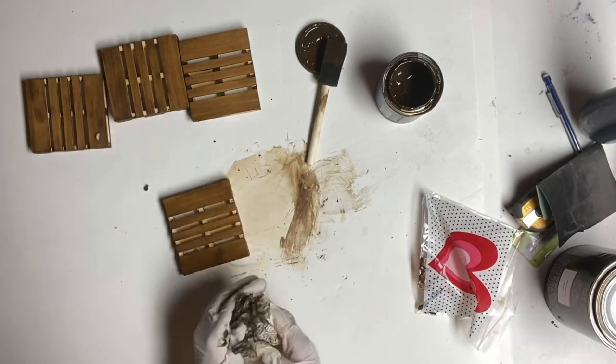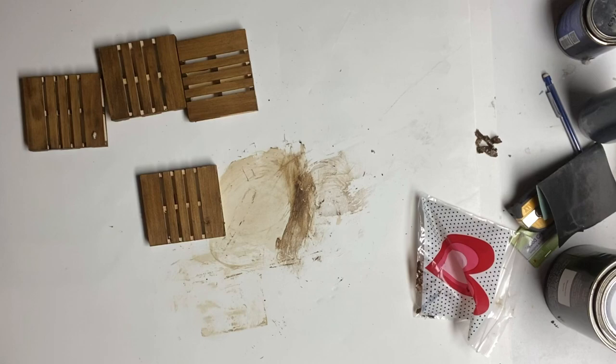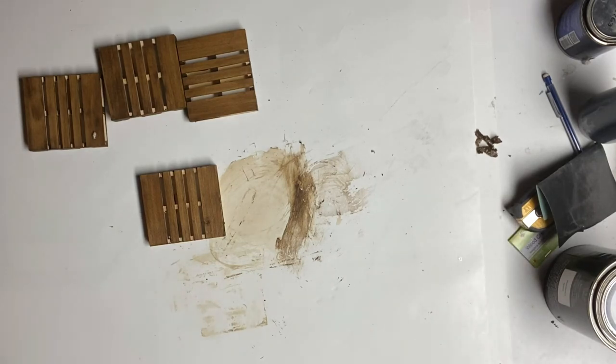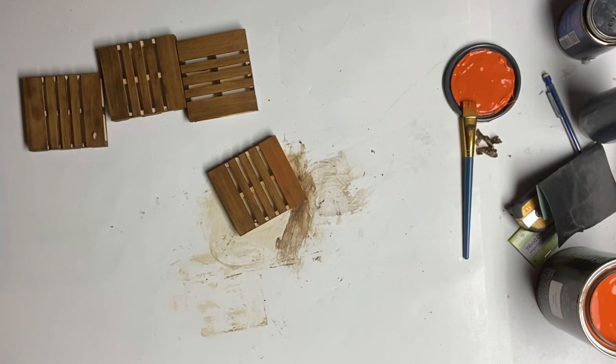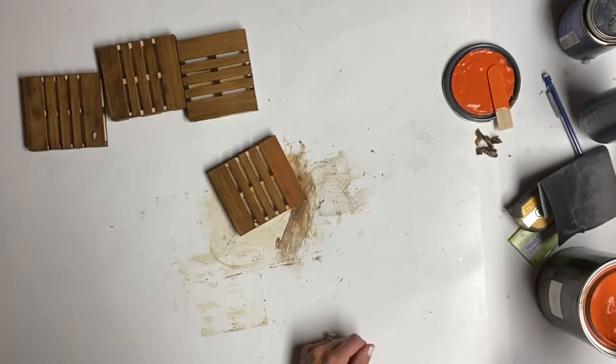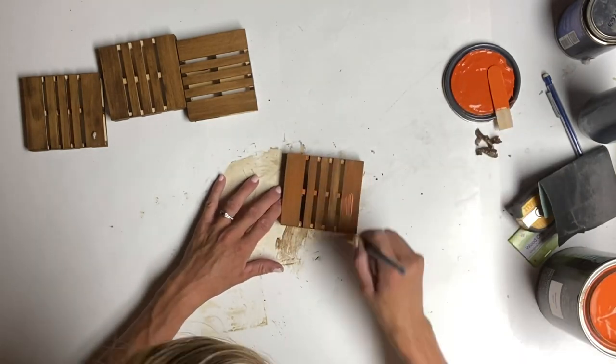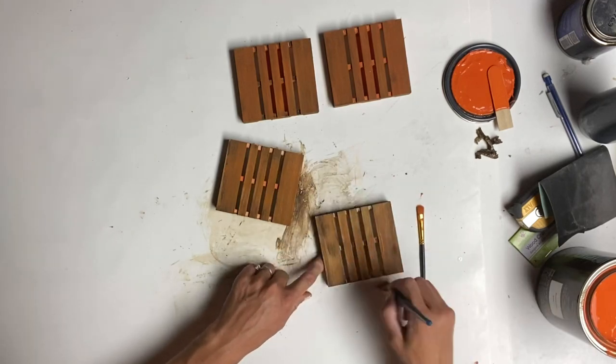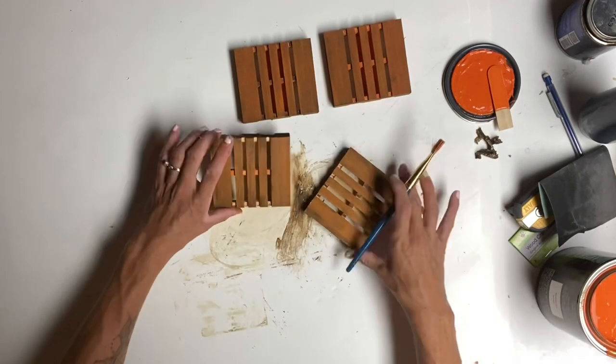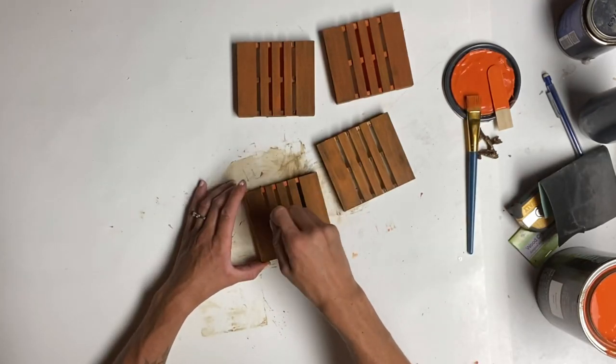Once all four of the wood palettes were covered with the gel stain, I took some Mandarina from Wise Owl Paint and covered the gel stain with the Mandarina. I did not wait for the gel stain to dry, and I actually liked how the orange and the gel stain blended together.